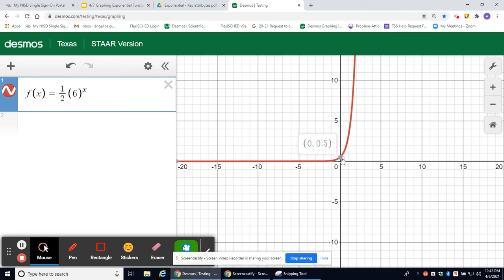Your range is going to be all real numbers greater than 0 because it never touches 0. It gets closer and closer to 0 but never touches it.